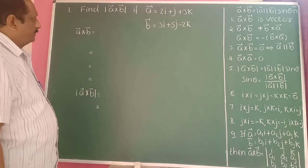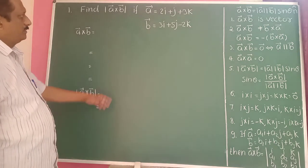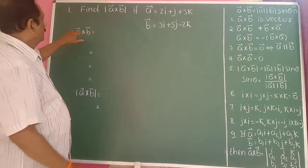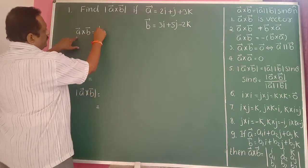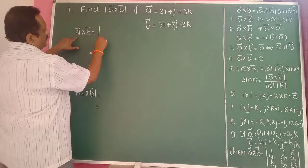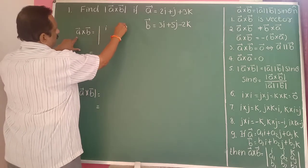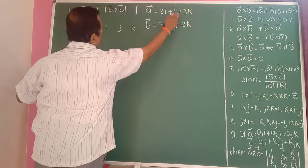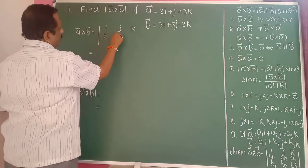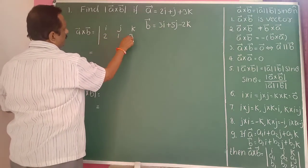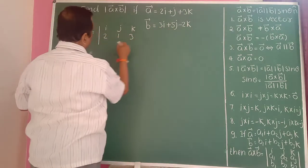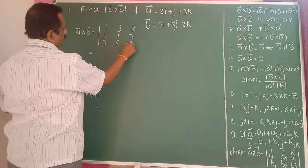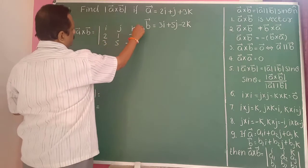Now take the previous example. These are the vectors in component form. Therefore a bar cross b bar is the determinant with i, j, k in the first row, then 2, 1, 3 in the second row, and 3, 5, minus 2 in the third row.